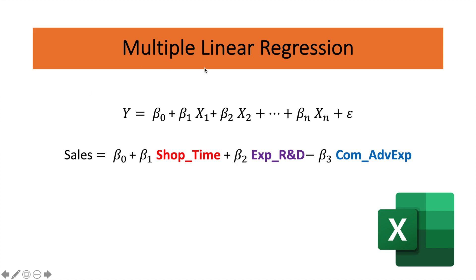Let me share with you a multiple linear regression model. We have y, which is the dependent variable; beta 0, which is the intercept; beta 1 and x1, which is the first independent variable; beta 2 and x2, which is another independent variable. This list can go on until beta n and xn, plus epsilon.